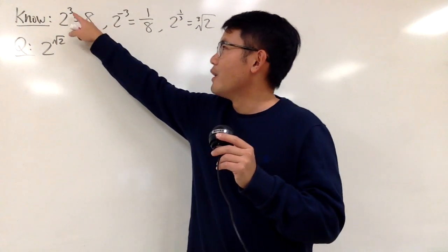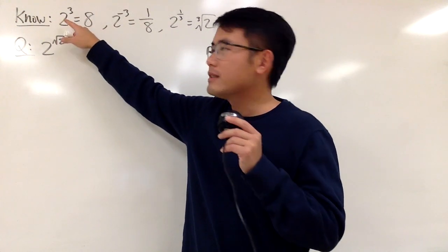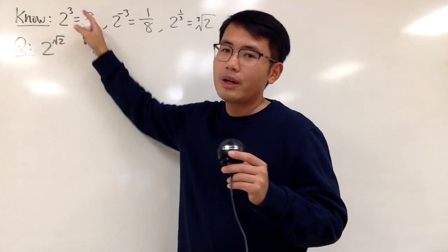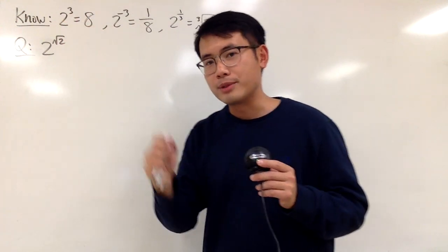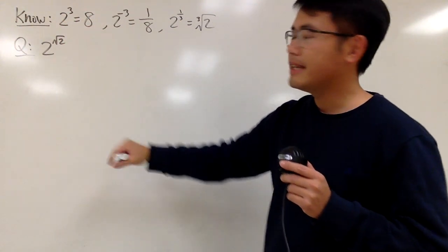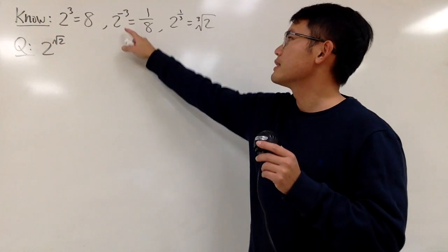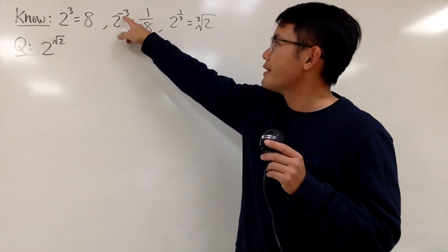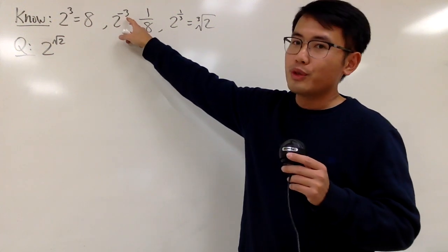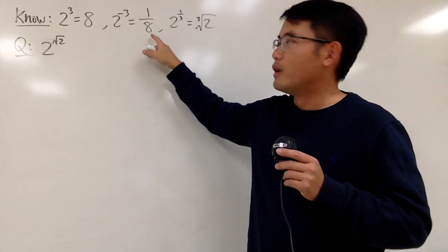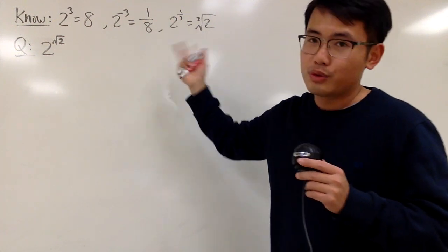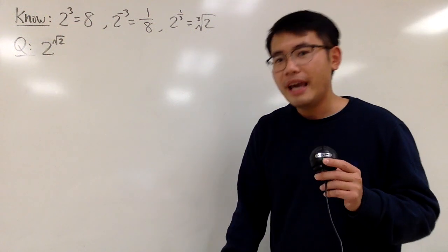As we all know, when we have a whole number exponent, such as 2 to the 3rd power, this means 2 times 2 times 2, which is 8. And when we have negative exponents, such as 2 to the negative 3 power, we just do 1 over 2 to the 3rd power, which is 1 over 8.